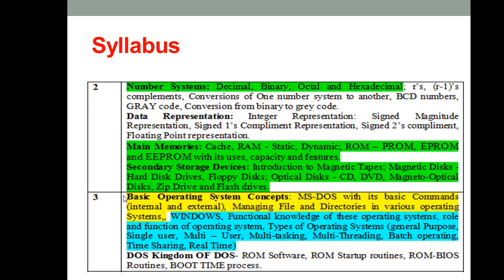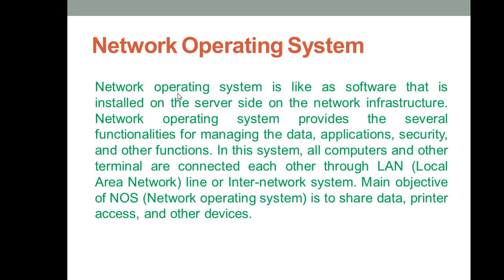Let us move to the next type of operating system, that is network operating system. Basically, in a network operating system we have one server connected to multiple computers. Whenever you hear 'network operating system,' you should picture one central computer system with one operating system serving different connected computers. In the definition, a network operating system is a software — a kind of system software — installed on the server side, on the network infrastructure.